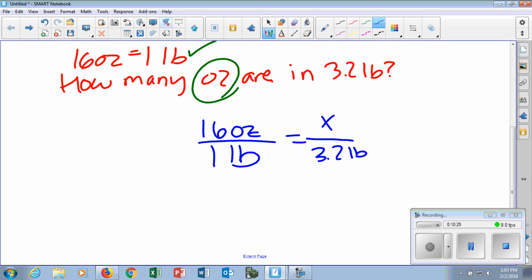We could rewrite this as 16 ounces over one pound equals x over 3.2 pounds. So I have my pounds on the bottom, my one pound and my 3.2 pounds. Those are on the same side. They're both in the denominator. And I have my 16 ounces on the top, and I'm also trying to find ounces. So I put that x on the top, too, because my x is what I'm trying to find right here. As long as my ounces are on one side and my pounds are on the other, it doesn't matter. I could have rewrote this as one pound over 16 ounces equals x over 3.2 pounds. As long as my pounds and ounces are on the same side as one another, it doesn't matter.